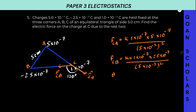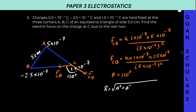The angle theta here is 120°. Since force is a vector quantity, we cannot add the two forces directly — we must use the resultant formula. The resultant of two vectors is: R = √(A² + B² + 2AB·cosθ). And cos 120° is minus one-half.